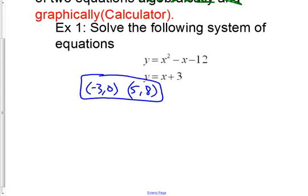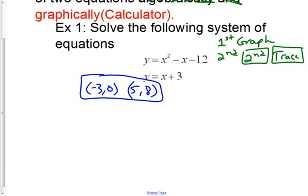Now, the steps to get here. So first, graph it. Second, hit the second button and trace. Calculate. Third, you go to number 5, which is the intersection.